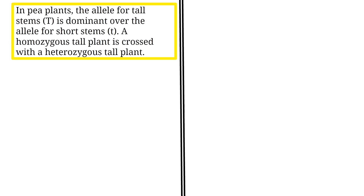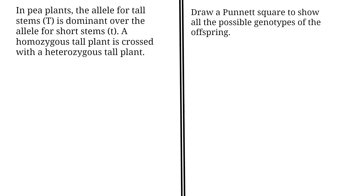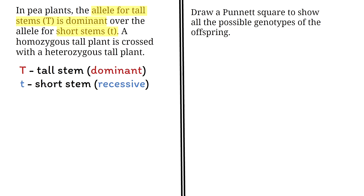The allele for tall stems, capital T, is dominant over the allele for short stems, lowercase t. A homozygous tall plant is crossed with a heterozygous tall plant. Draw a Punnett square to show all the possible genotypes of the offspring. Drawing a Punnett square is a recurring question in the GED science test. The allele for tall stems is capital T because it is dominant, and the allele for short stems is lowercase t because it is recessive. According to the question, a homozygous tall plant is crossed with a heterozygous tall plant.